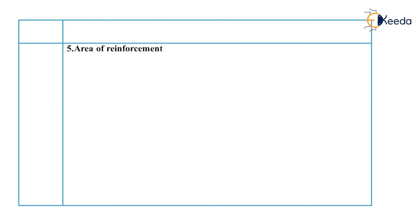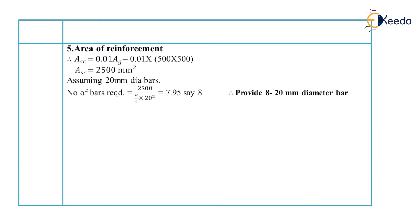So for that we will find out the area of reinforcement. And in step number one we have calculated the area of reinforcement is equal to 0.01 of Ag. So 0.01 of Ag is 500 by 500 which is equal to 2500 mm square. Now we will assume 20 mm diameter bar and the number of bar required is equal to 7.95. Let us provide 8 number of bar of 20 mm diameter.